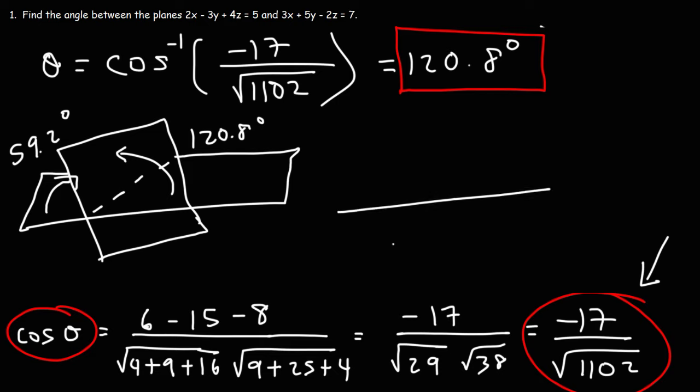Just think of the intersection of two lines. So this angle would be 120.8. And this other acute angle is 59.2. So that's how we get two possible answers. So that's how you can find the angles between the two planes.